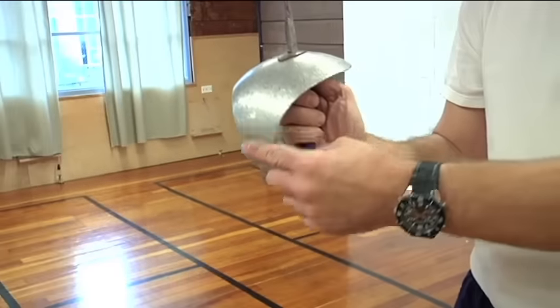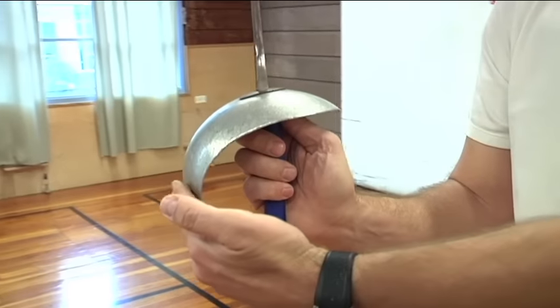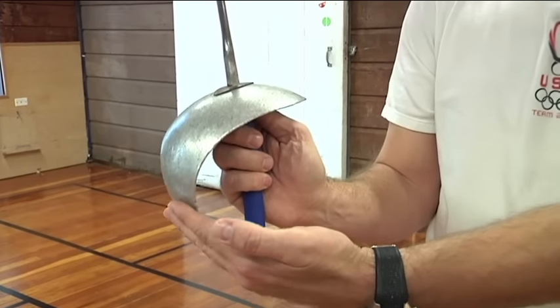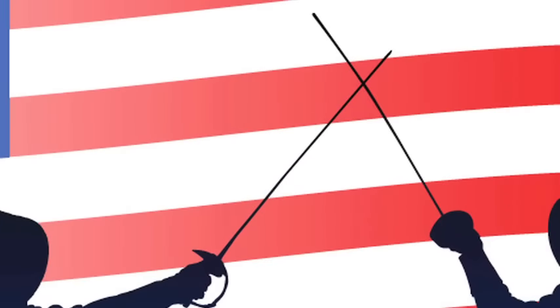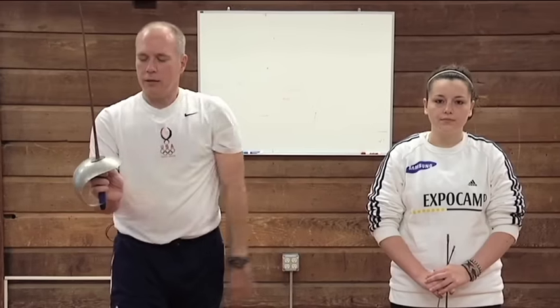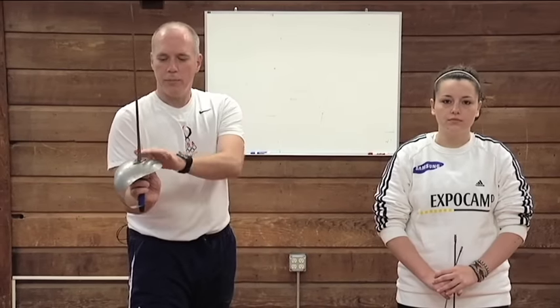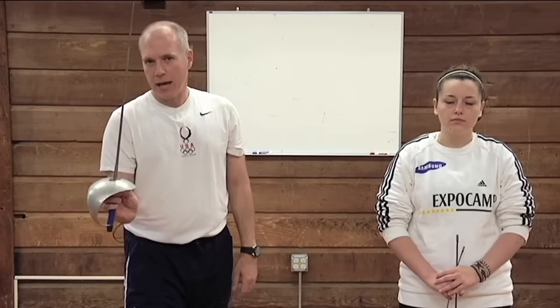You'll notice that the bell guard is differently shaped. It curves around your hand and that is to protect your hand from cuts and allow you to capture the opponent's blade against your bell guard and your blade so that you can stop their attack from scoring.